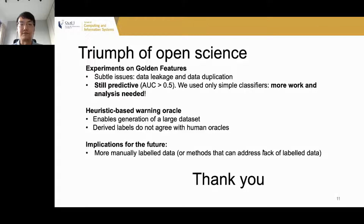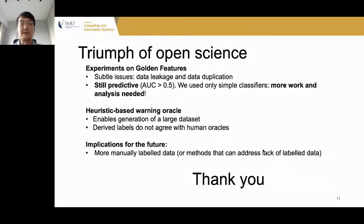In our experiments we used only very simple classifiers such as SVMs and k-nearest neighbors, so our work motivates the need for more work and analysis. The heuristic enables generating large datasets, but the labels derived through the heuristic do not agree with human annotations. This implies that in future we need more manually labeled data, or methods that can address the lack of labeled data when labeling is too expensive. That's all from me — thank you.